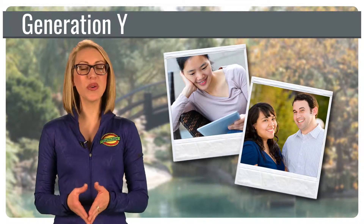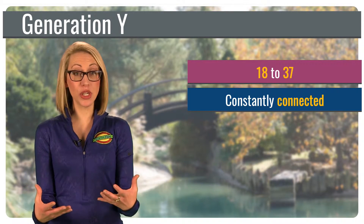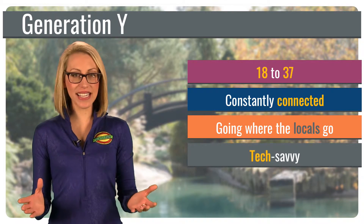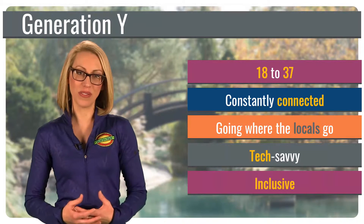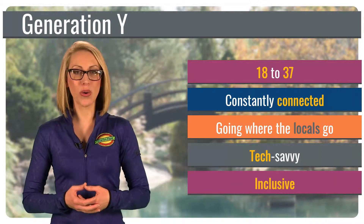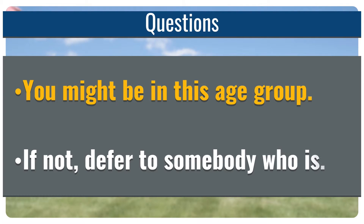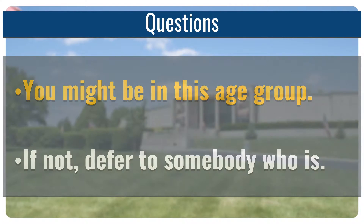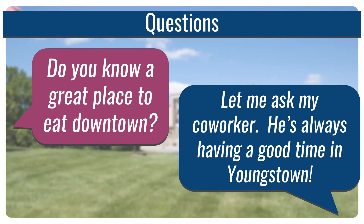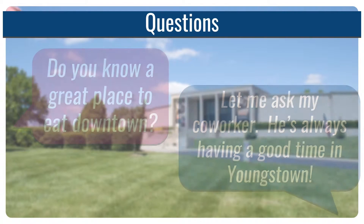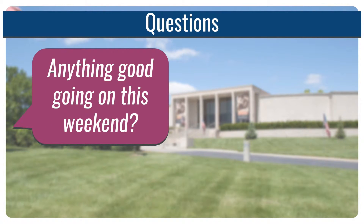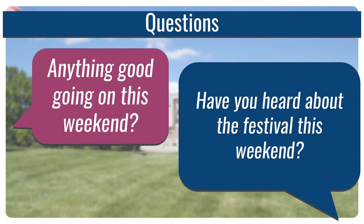Let's look at our last age group, Generation Y, ages 18 to 37. These folks are constantly connected to each other and want to go where locals their own age go. They're tech savvy and grew up as part of an inclusive generation — they want to be included and involved. So their needs are connectivity, going where locals go, reliance on technology, and being included and involved. You might be in this age group; if not, you could defer to somebody who is. You could say, I don't know, but let me ask my coworker — he's always having a good time with his friends and he'll have some great suggestions. For the second question, anything good going on this weekend, you could ask, have you heard about the festival going on this weekend? You could also check out the events tab on your local convention and visitor bureau's website — it puts you right up to date with what's happening today, and you can even tag your favorites from your phone.